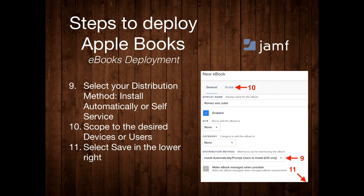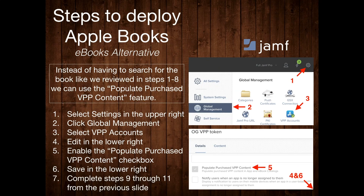Next, select the distribution method — you can make books install automatically so they're ready for students right away, or scope to Self Service so students can download from a catalog at their leisure. After this, select Scope in the upper left and scope the book to the desired devices or users. Then select Save in the lower right and the book should be deployed.